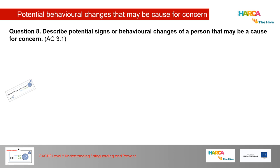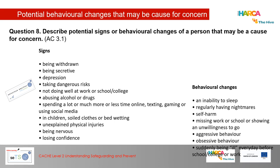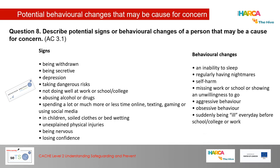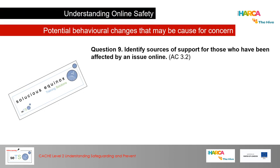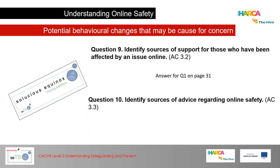Question 8 asks you to describe potential signs or behavioural changes of a person that may be a cause for concern. Remember the key action verb is 'describe' — I do not want a list of bullet points; I want expansion and detail, with examples from your own experience or research. Question 9 asks you to identify sources of support for those who have been affected by an issue online. Question 10 asks you to identify sources of advice regarding online safety.